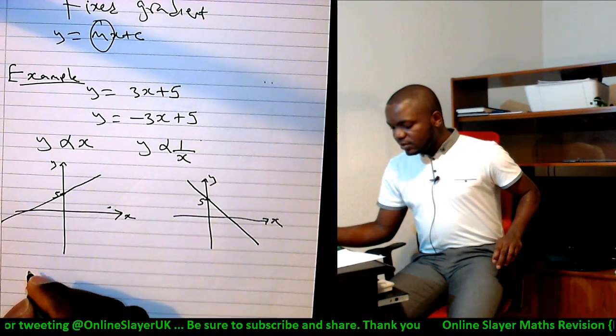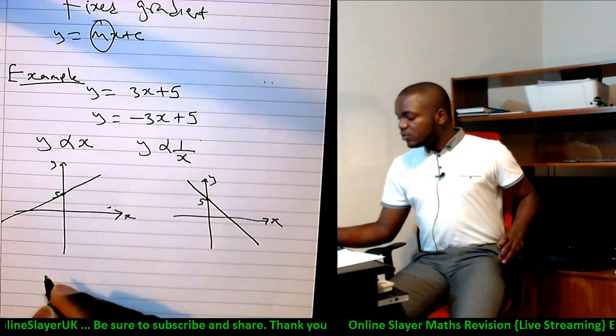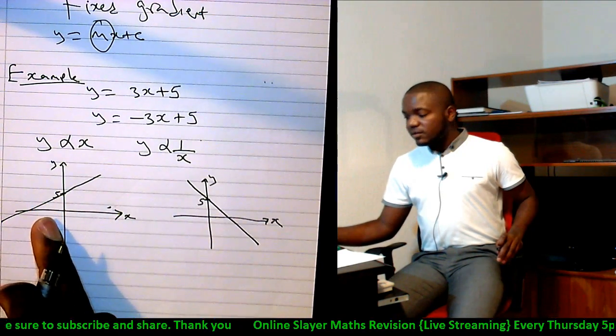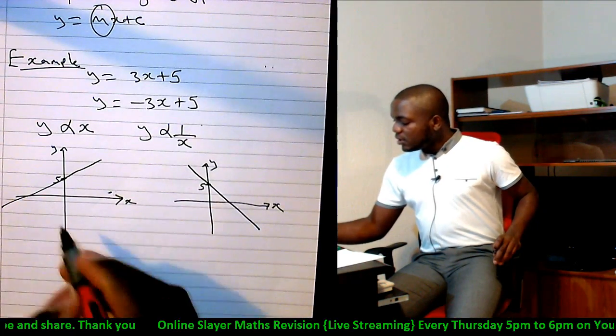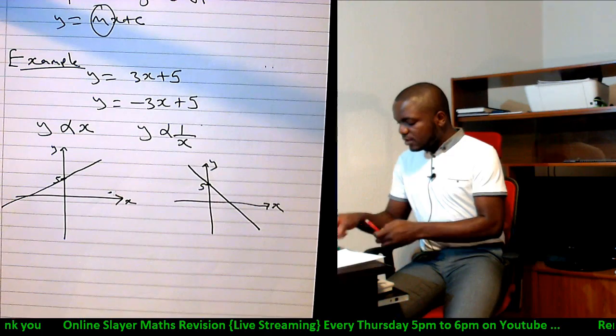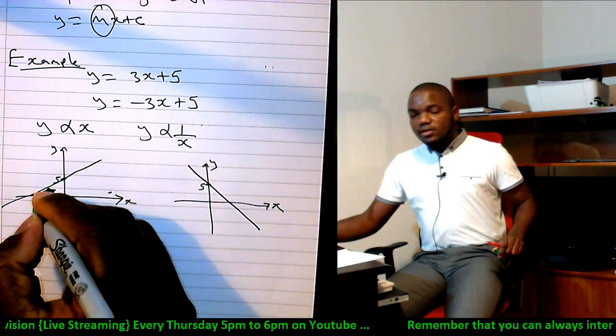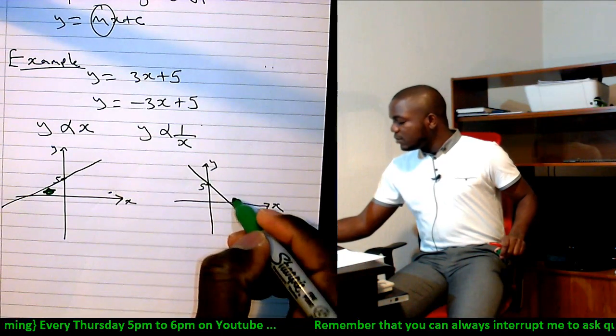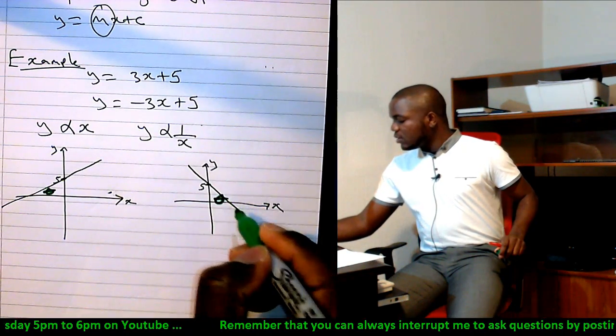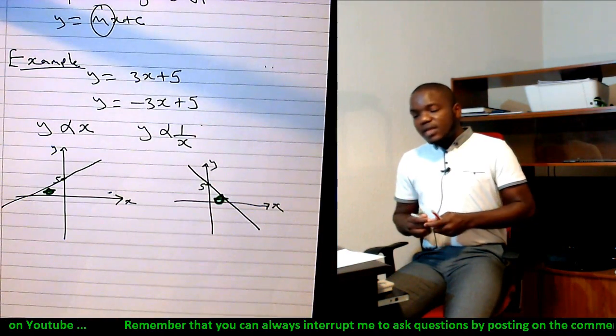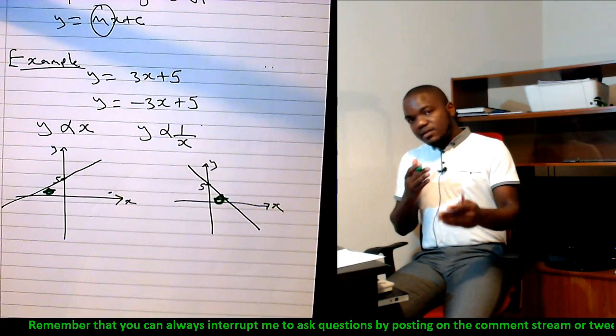Also, the gradient tells us another thing. The gradient tells us the angle between this line and the horizontal. For instance, you can see this line here makes an angle, let's say angle theta, to this horizontal, and this line also makes an angle theta to this horizontal.